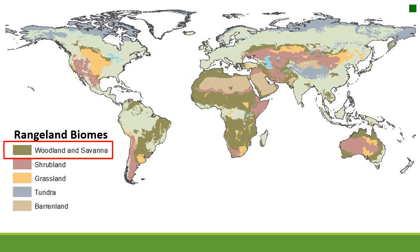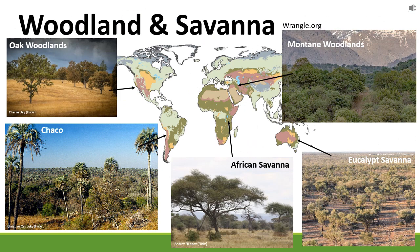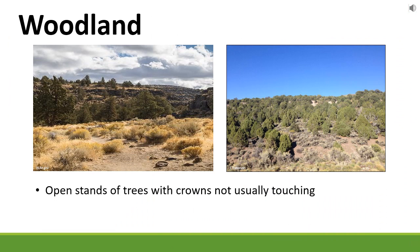The next biome is woodlands and savannas — really interesting biomes that get a little bit more precipitation than most of our grasslands and shrublands. In the United States we tend to have more of the woodland side, whereas places like Africa might have more savanna, and we'll talk about some of those differences.